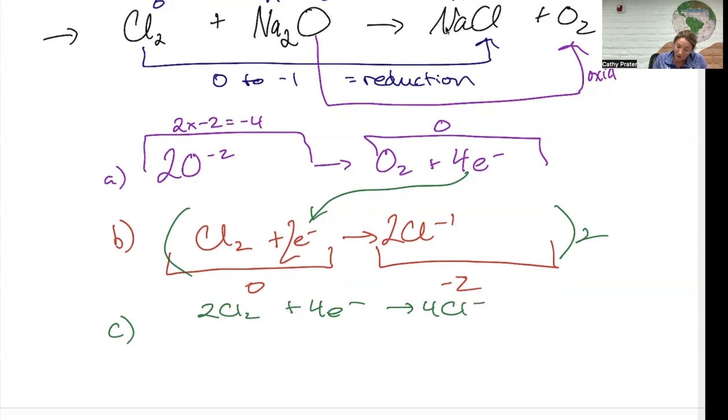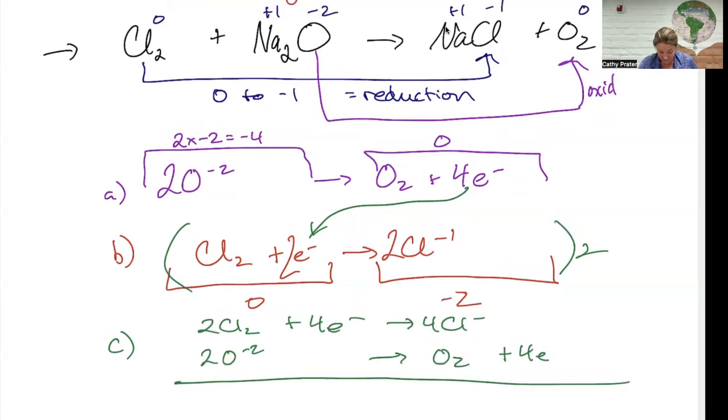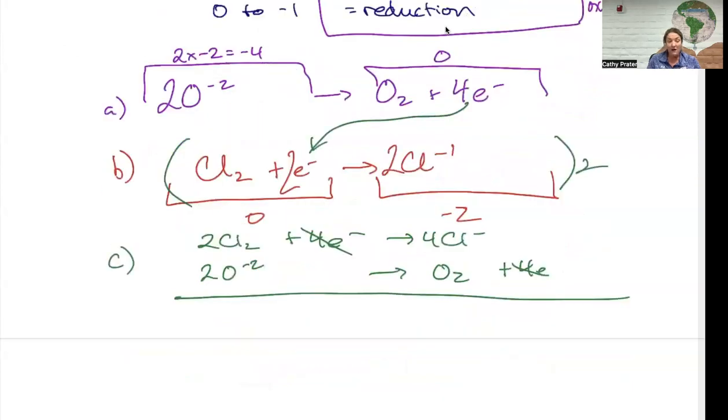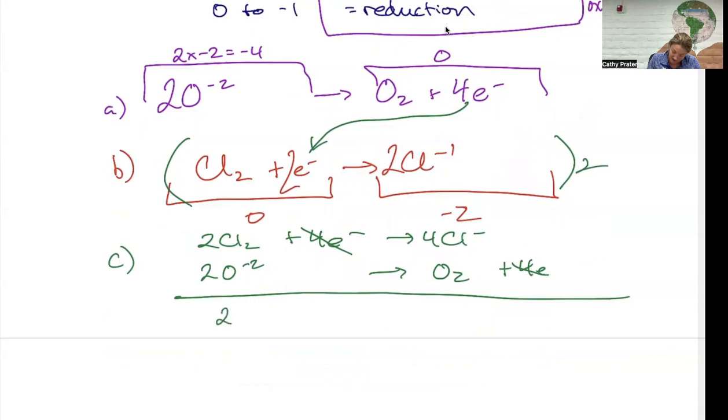Now, when it's combined with the above reaction into an overall reaction, the electrons are going to cancel. So now, writing my overall reaction, I have 2Cl₂ plus 2O minus 2 forms 4Cl minus and O₂. This would be my balanced overall reaction after I've gotten rid of the sodium that does nothing.